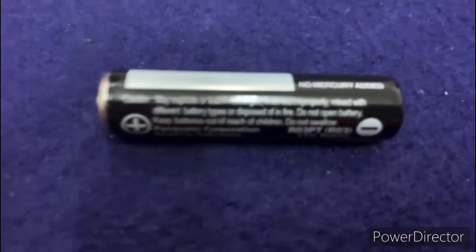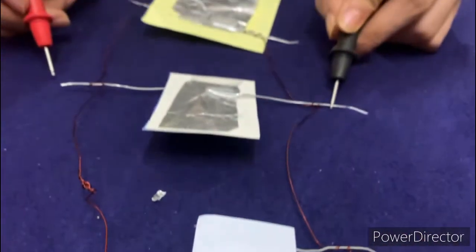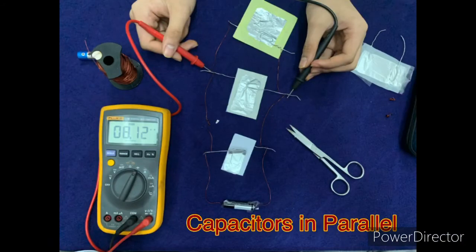So we made a parallel series of capacitors. And we connected this battery right here. Now we're gonna measure the capacitance of these capacitors. For capacitor arranged in parallel, we get a capacitance of 0.812 nanofarad.